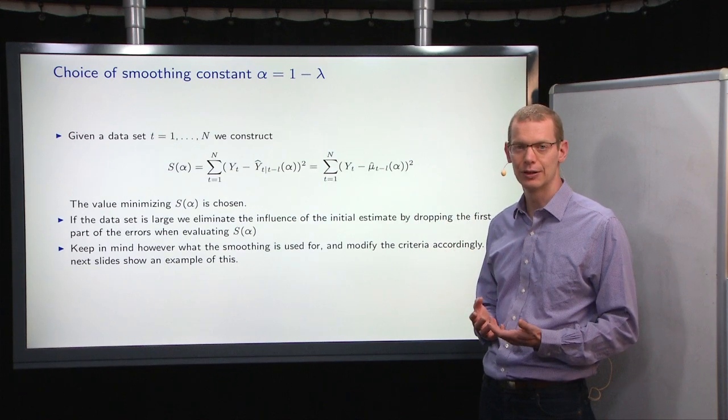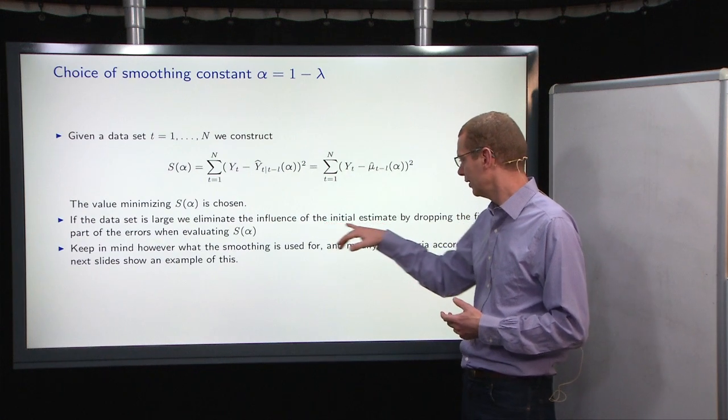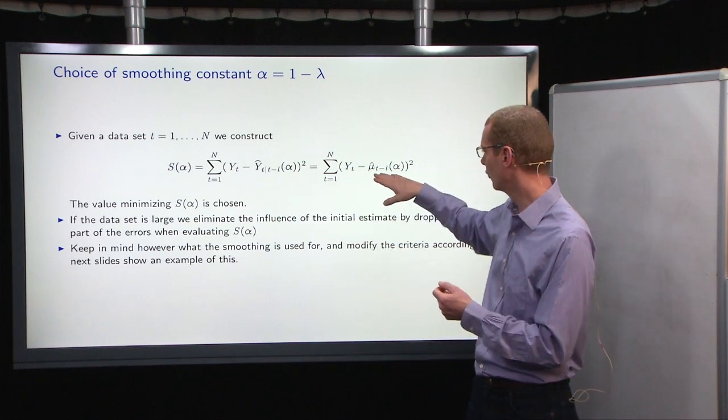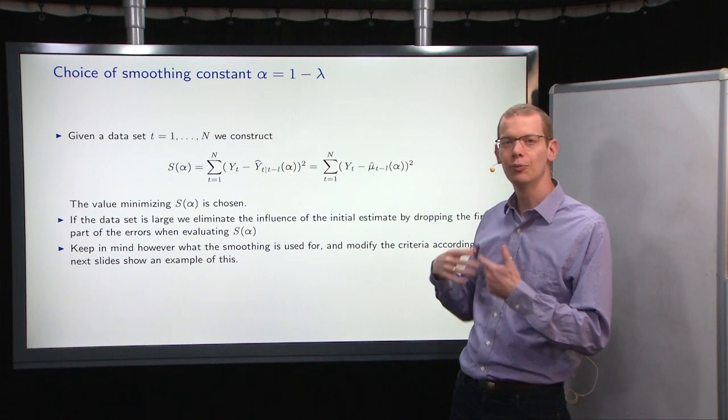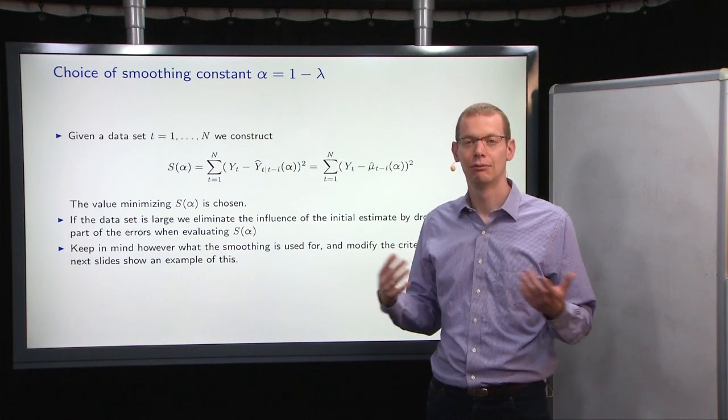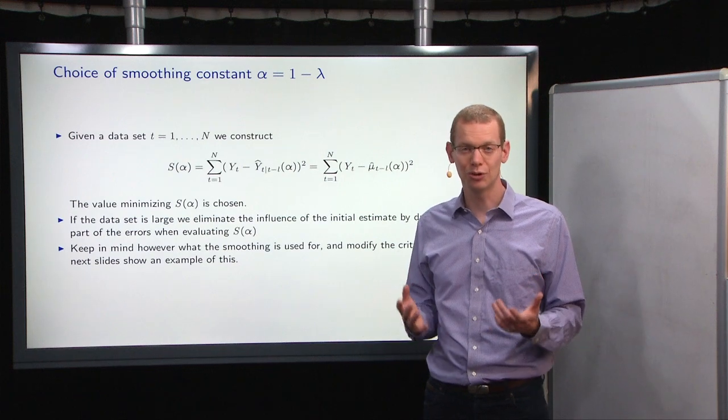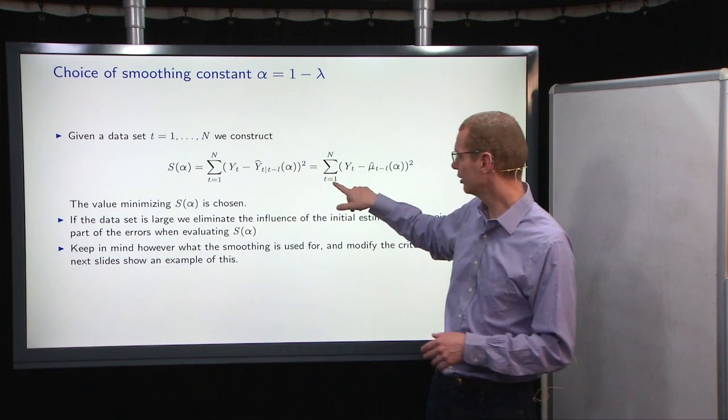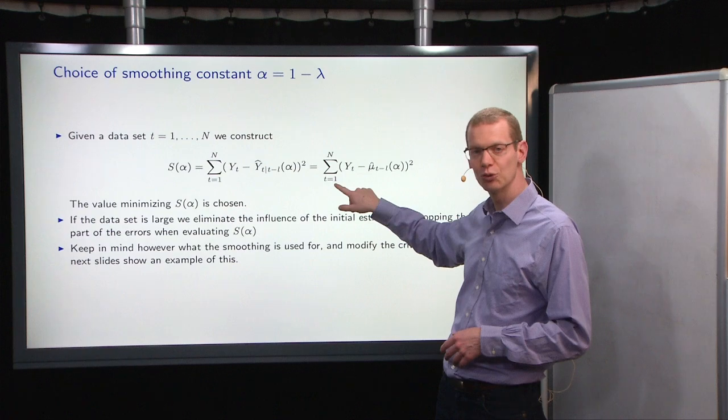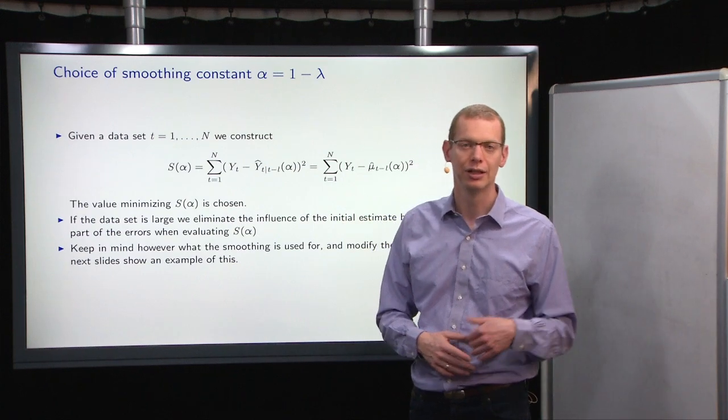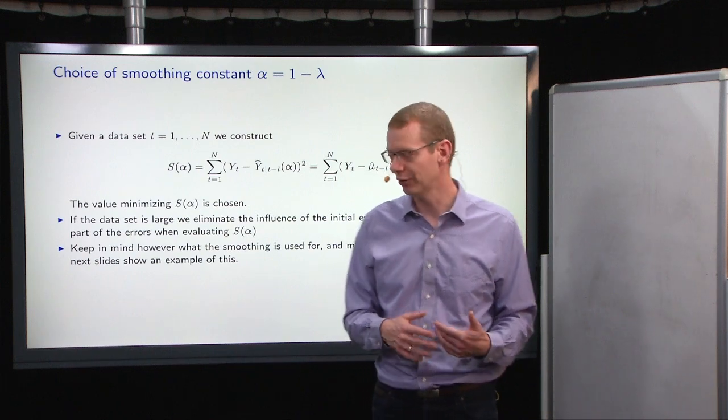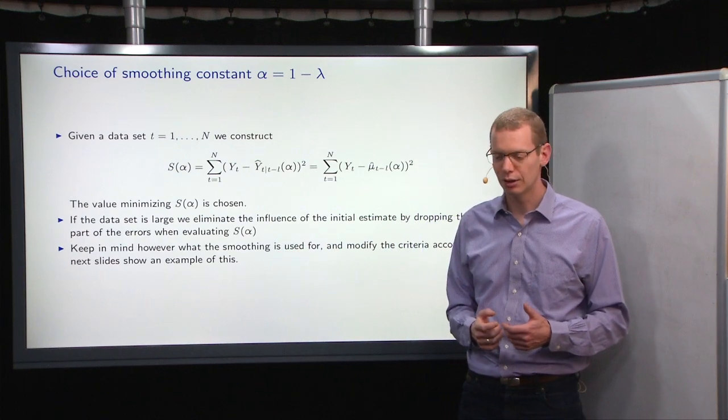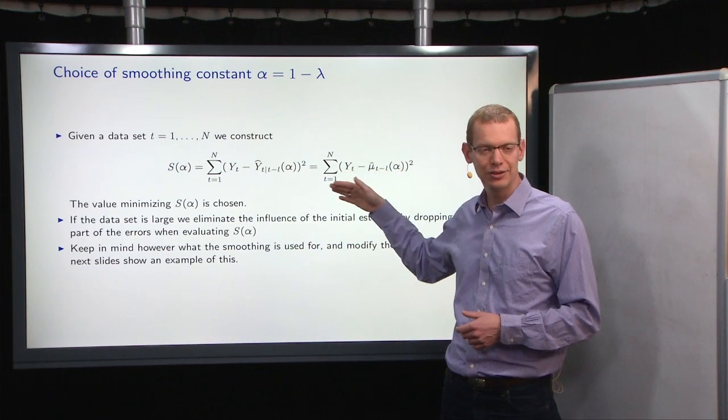Now, if you have many observations, then the initial estimate, so what I just said before, you just start with the first estimate of mu to be, say, mu1, to be the first observation. Maybe there's much noise in the system, so you don't want to use that. Then what you should do is to just skip the first element in this sum, so you can, instead of starting the sum from t equals 1, you can just start from t equals, say, 10 or 100, if you have sufficient number of observations. So keep in mind, again, what the smoothing is used for, and use the criteria that matches your needs.